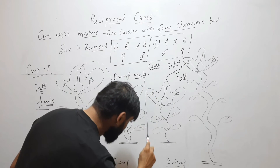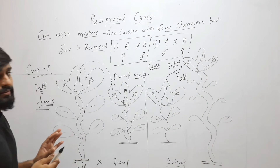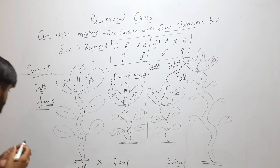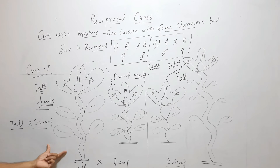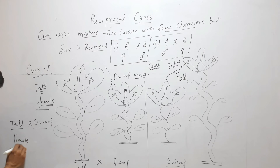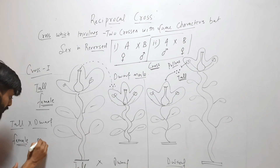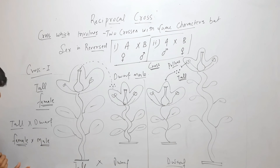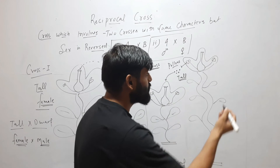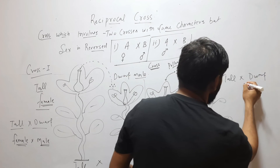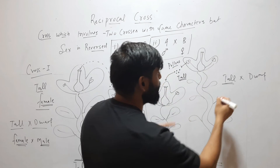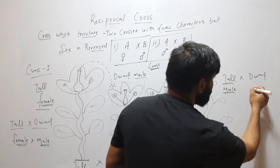So in these two crosses, characters are the same — it was a cross between tall and dwarf in both. In cross number one, the tall plant was female and the dwarf plant was male, so I used pollen from the male. In cross number two, there was also a cross between tall and dwarf, but I used the tall plant as a male and the dwarf as a female.